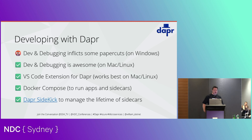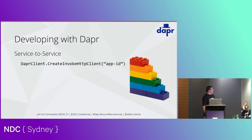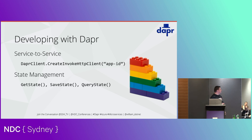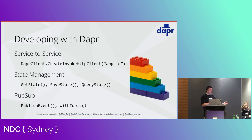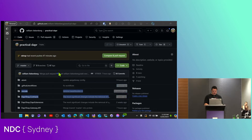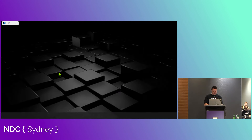We quickly looked at the Dapr SDK. You can do service-to-service calls quite easily, invoking a client with an app ID. It takes care of service discovery for you. State management — get state, save state, there is a query state method. You can publish events, and you can also subscribe and listen to events on a topic.